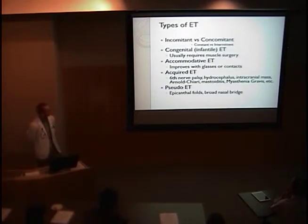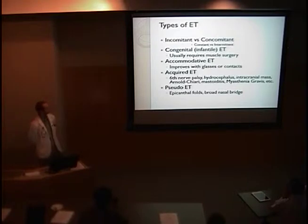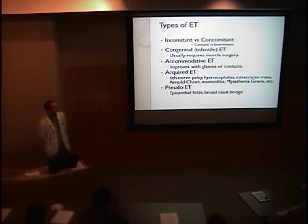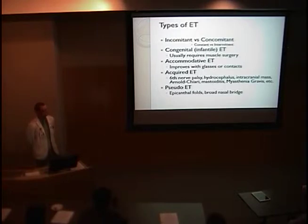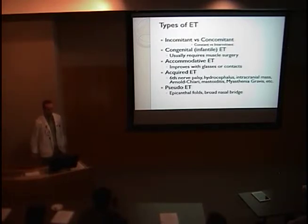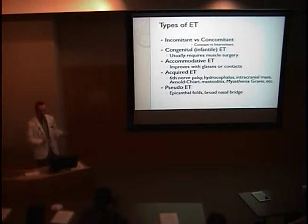So, types of ET. There are several broad categories. Most people try to divide esotropia into incomitant versus concomitant, where incomitant means the size of the deviation varies depending on the gaze of the patient, and concomitant means the size of the deviation is constant no matter where the patient is looking.